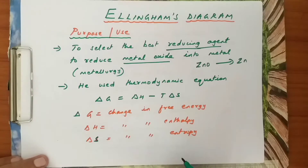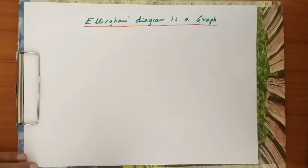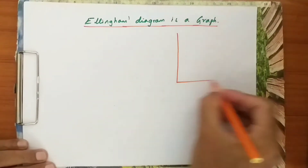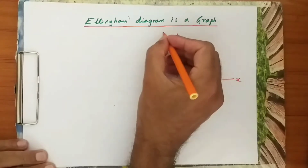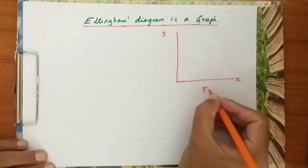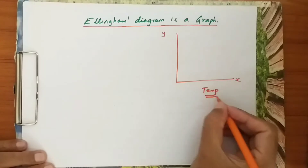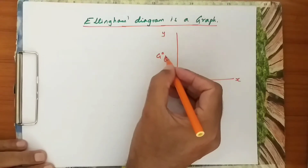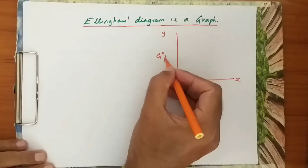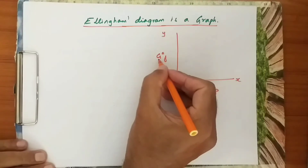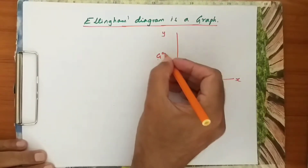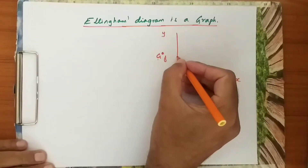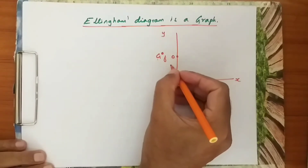Now I will explain how to draw the Ellingham's diagram. It is a graph where the x-axis represents temperature and the y-axis represents ΔG°f values — the standard free energy values for the formation of metal oxides. On the y-axis, the values go from 0 down to negative values like −200, −400, −600, and above 0 there are positive values.